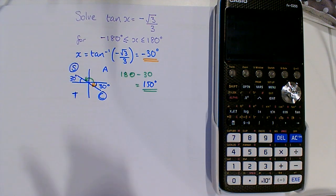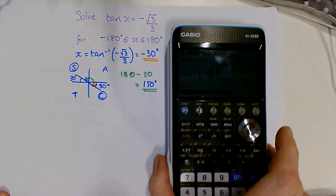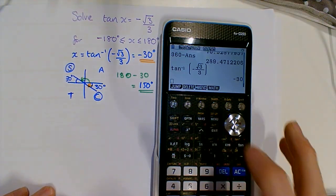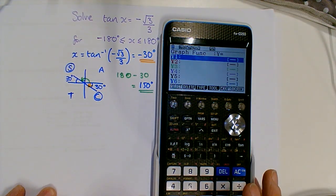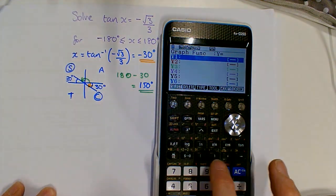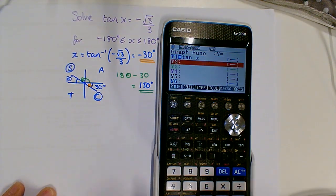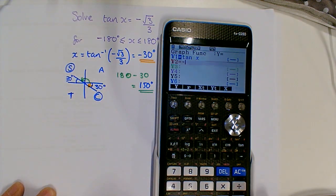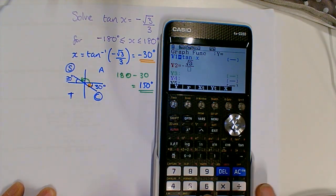Right, and I'm going to check that I've got the correct solutions using graph on my calculator. So if you go to menu 5 and type in, we want y equals tan x and we want y equals negative root 3 over 3.